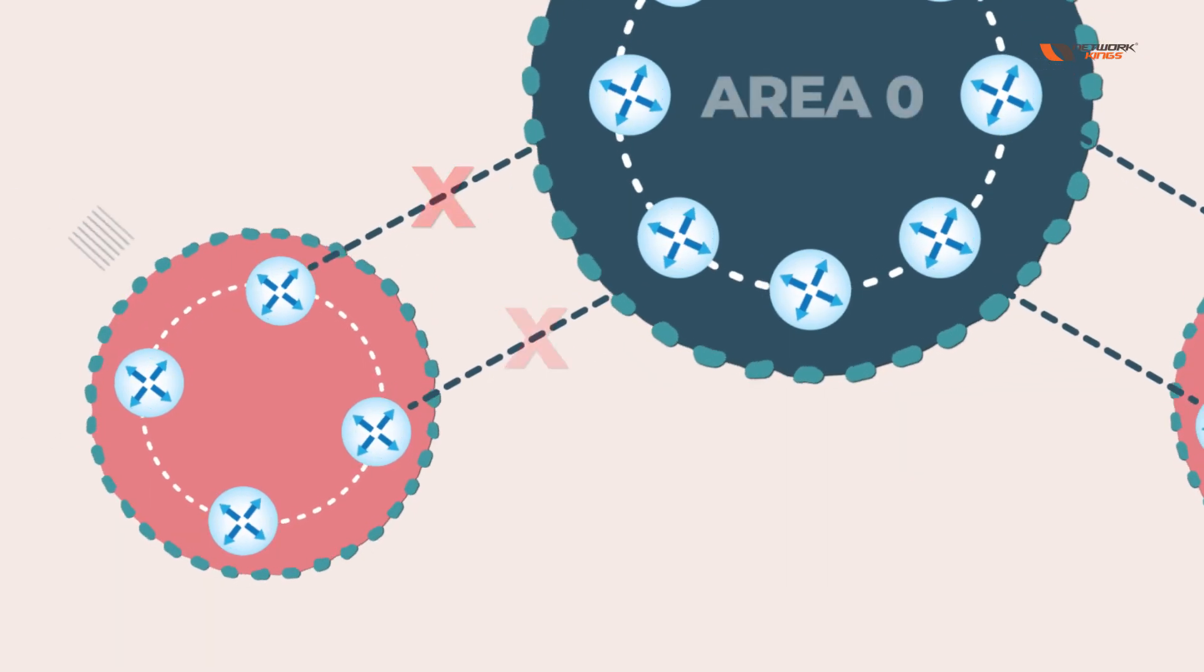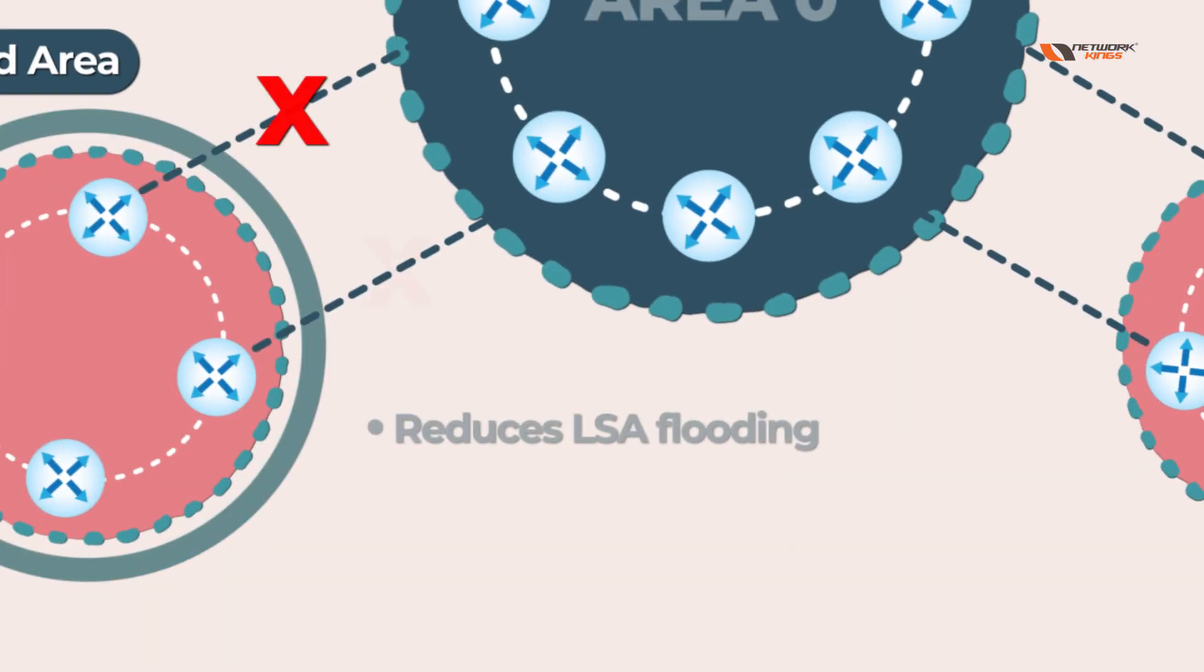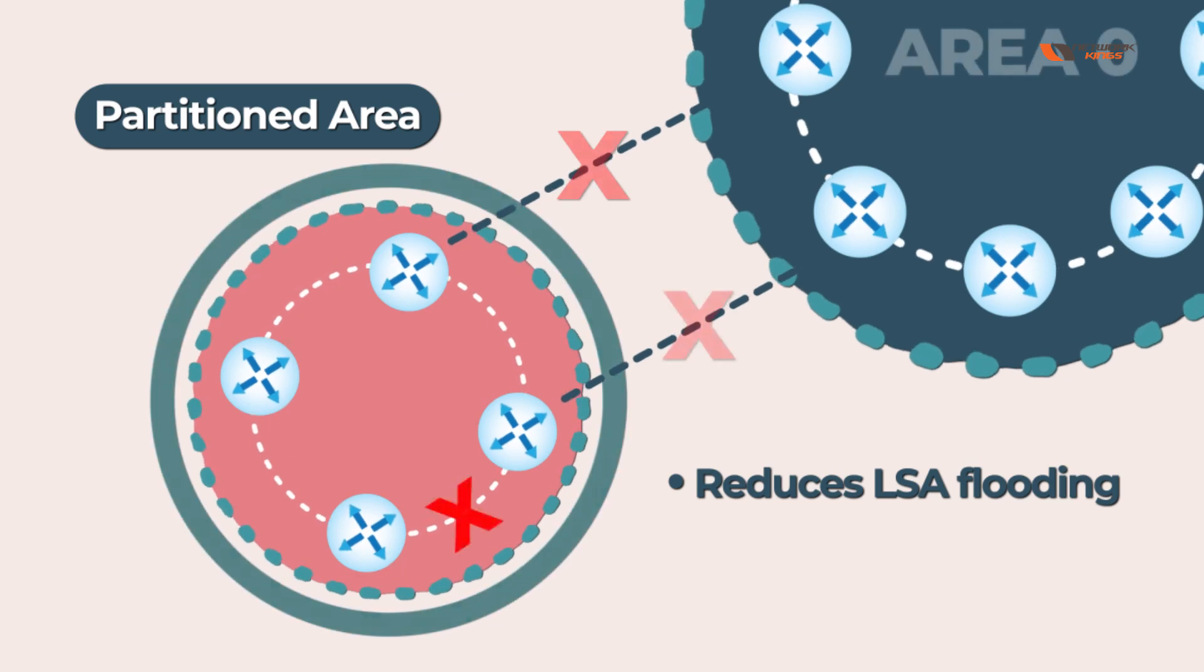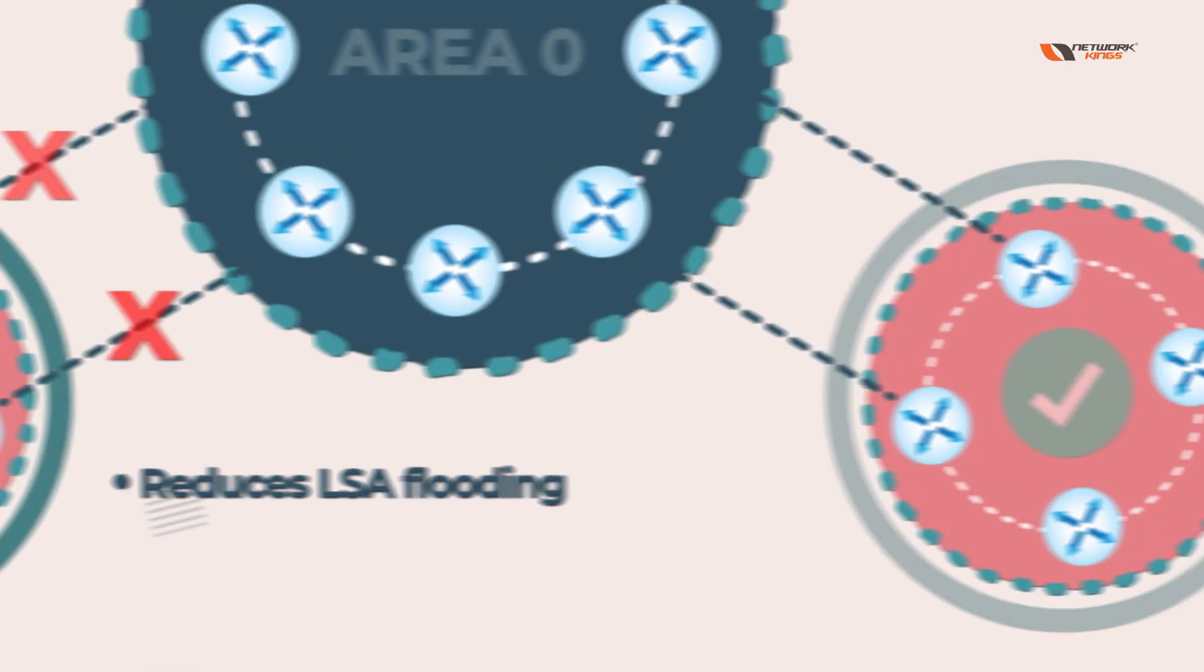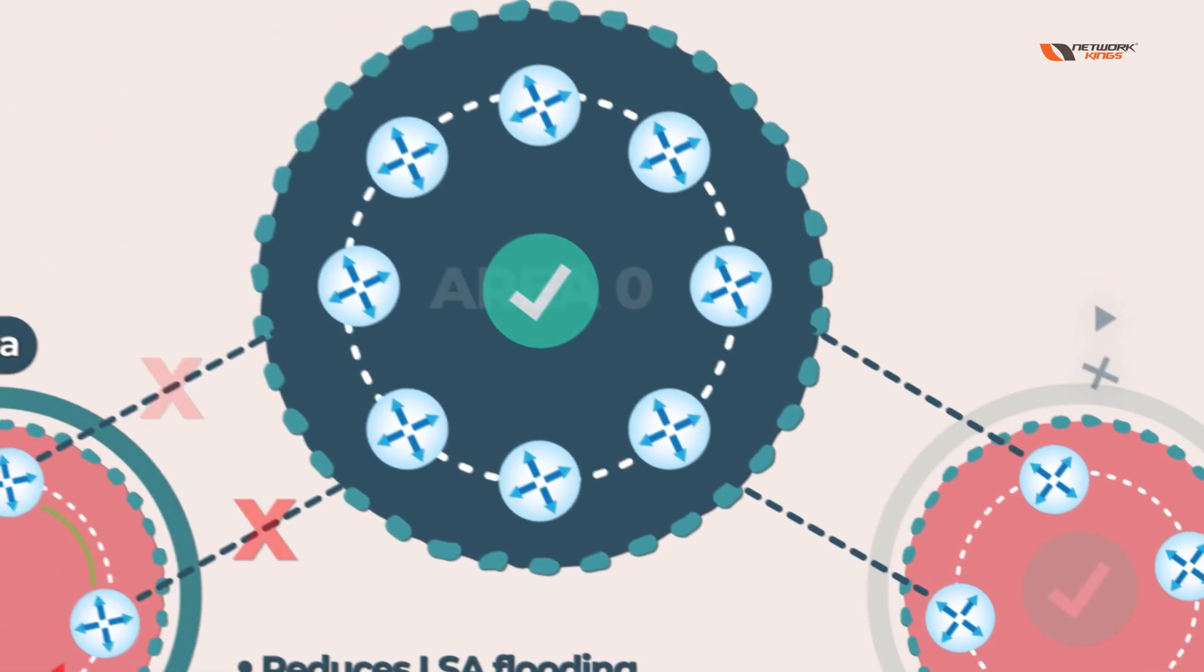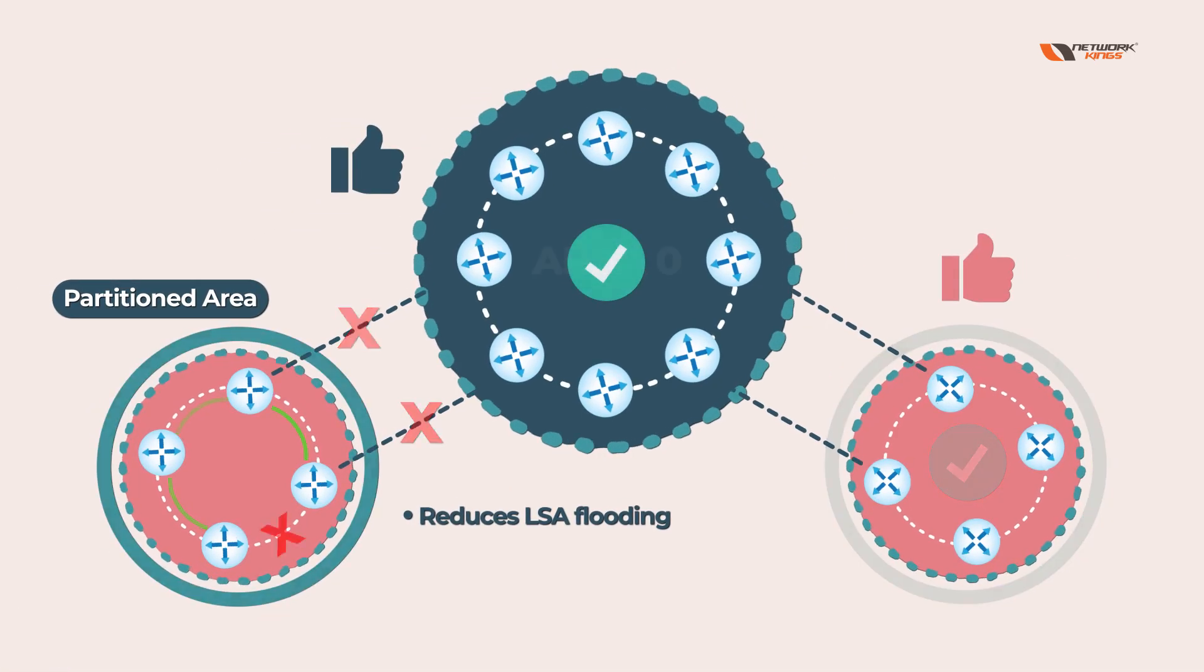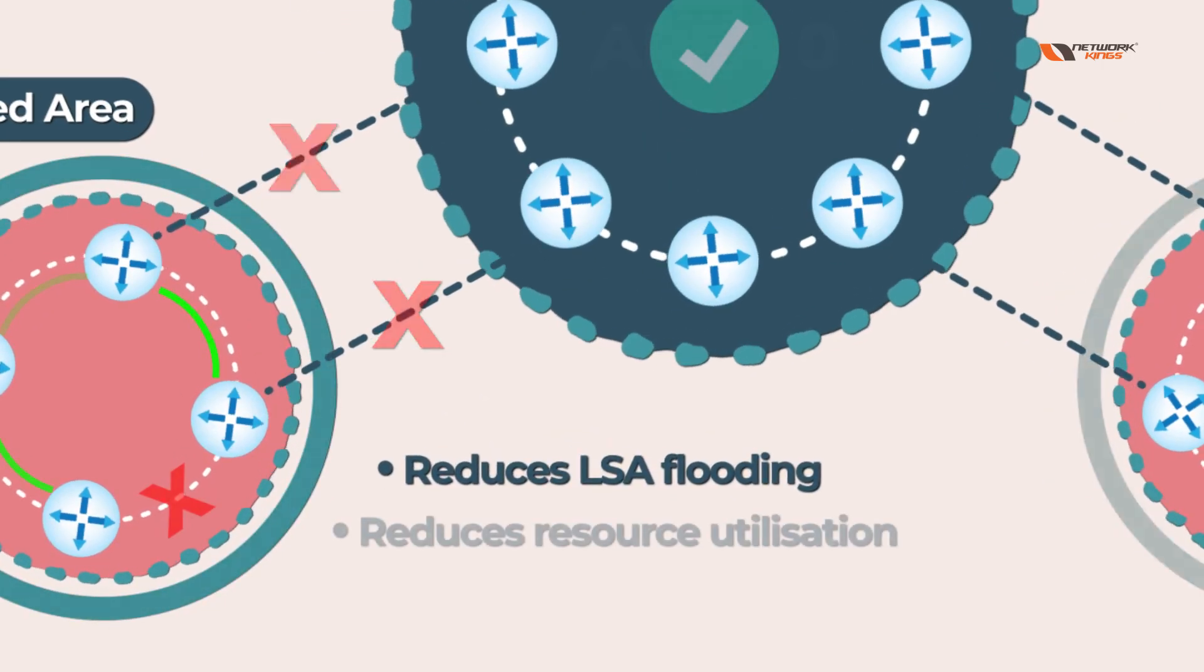In short, it will reduce LSA flooding, meaning if you have any problem, you will only update to your neighbors. OSPF neighbors will not flood to different areas, and due to this we can manage OSPF properly. This also reduces resource utilization.